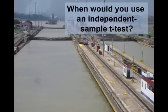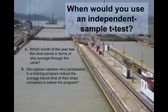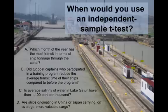Now we're going to show you several examples about Panama Canal, questions you might ask. And the question is, when in these four cases might you use or could you use an independent sample t-test? So one of the questions is, which month of the year has the most transit in terms of ship time to the canal? Could you use an independent sample t-test for that? Did tugboat captains who participated in a training program reduce the average transit time of their ships compared to before taking the training program? Could you use an independent sample t-test for that? Is the average salinity of water in Lake Gatun lower than 1.100 part per thousand? And Lake Gatun is the lake that's part of the canal. And then finally, are ships originating in China or Japan carrying on average more valuable cargo?